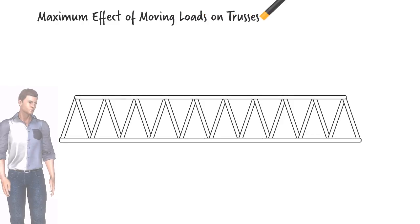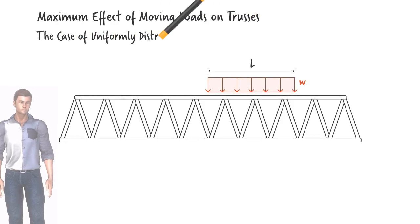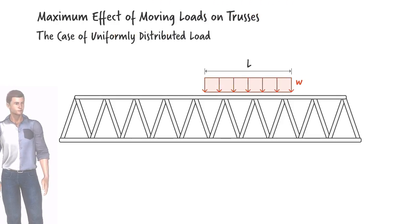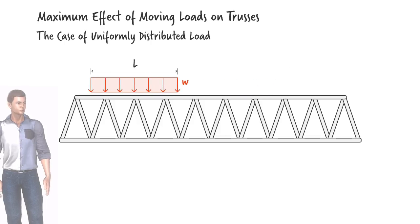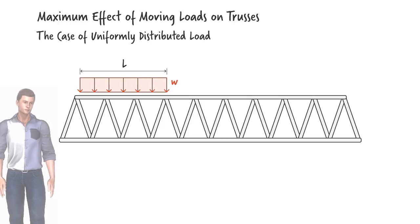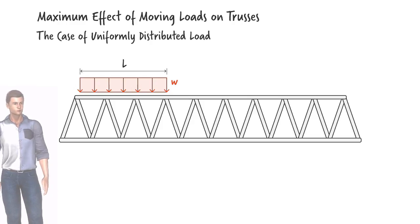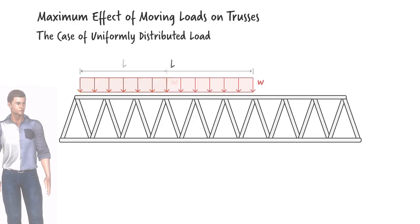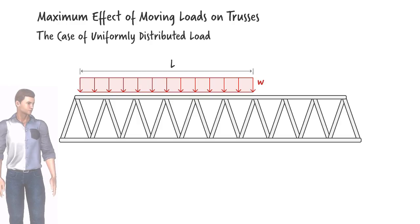This lecture deals with the analysis of trusses subject to uniformly distributed loads that move, like trains that move across a bridge. In the case of railroad bridges, the load could be considered uniformly distributed with a variable length, since trains that cross the bridge could have different number of cars.